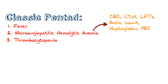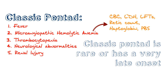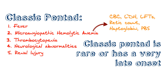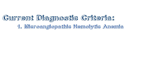Also you should note that there should be thrombocytopenia, as well as neurologic abnormality such as altered mental status, and finally there should be renal injury. Now your classic test question will test this pentad, but realize the pentad occurs very rarely or has a very late onset. So when we actually have these patients in the hospital, you don't need the entire pentad. So what is our current diagnostic criteria?